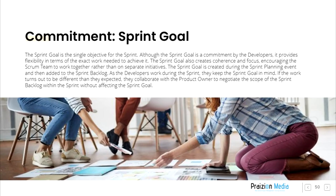Commitment: Sprint Goal. The Sprint Goal is the single objective for the Sprint. Although the Sprint Goal is a commitment by the developers, it provides flexibility in terms of the exact work needed to achieve it. The Sprint Goal also creates coherence and focus, encouraging the Scrum Team to work together rather than on separate initiatives. The Sprint Goal is created during the Sprint Planning event and then added to the Sprint Backlog. As the developers work during the Sprint, they keep the Sprint Goal in mind. If the work turns out to be different than they expected, they collaborate with the Product Owner to negotiate the scope of the Sprint Backlog within the Sprint without affecting the Sprint Goal.